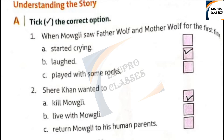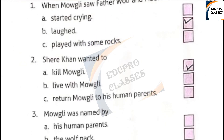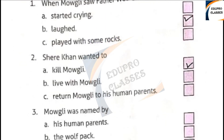Question 2: Shere Khan wanted to — A: kill Mowgli, B: live with Mowgli, C: return Mowgli to his human parents. The right answer is A: kill Mowgli.